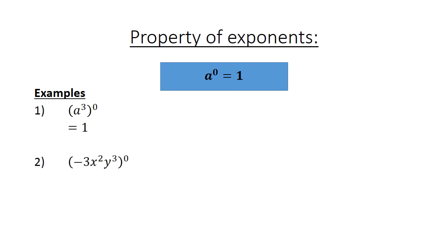Number 2: in brackets, negative 3, x to the power of 2, y to the power of 3, close brackets, equals 1. Number 3: 5 to the power of 0 equals 1.